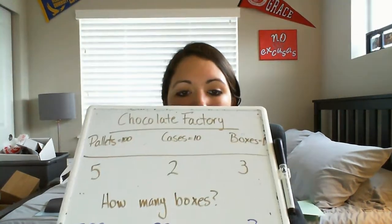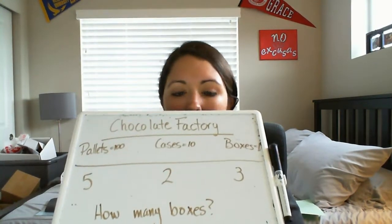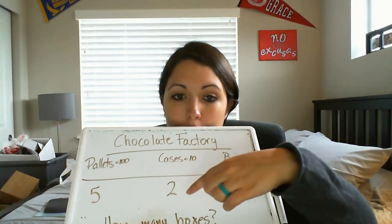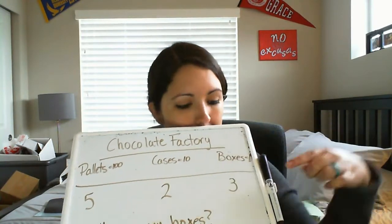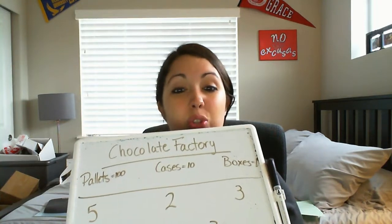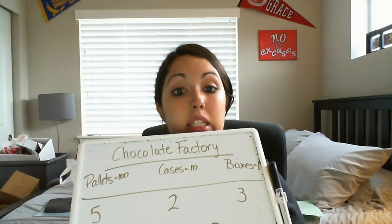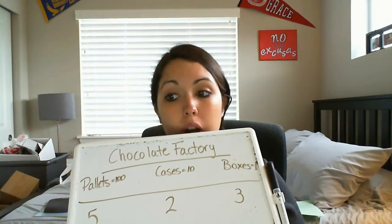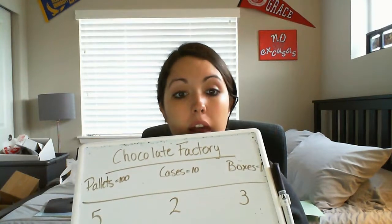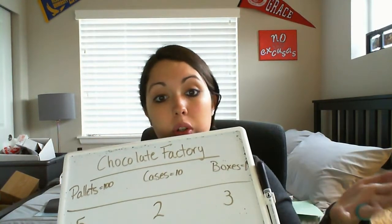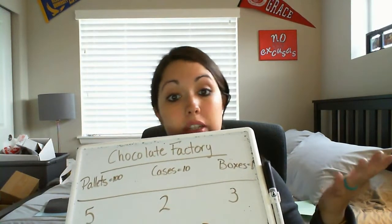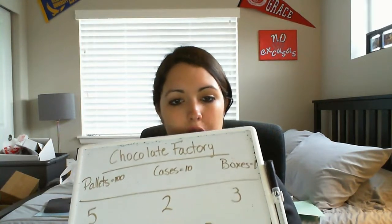An example would be that a store has five pallets, two cases, and three boxes — maybe that's how much a store gets delivered or currently has. Then they need to decide whether to have the factory bring them more, or not, because they haven't sold enough.